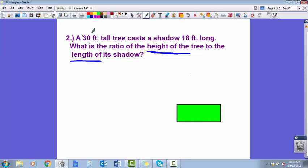Okay, so the same thing here. Because the tree actually is taller than the shadow, you are going to end up with what looks like a top-heavy fraction. But remember, you're not actually writing a fraction. You are writing a ratio.